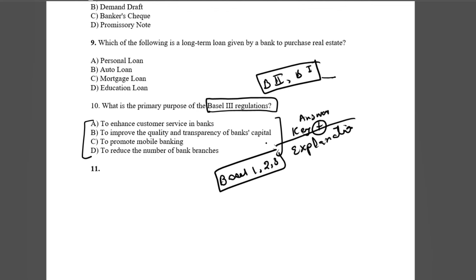Just as I told you with the FRBM Act — for forward linkages, you look at how many amendments are in the Act. So if you look at every test series, you will get three or four Economy test series, and in every test series there will be 30 questions. 30 questions means 30 topics, and you will get an explanation with each of them.